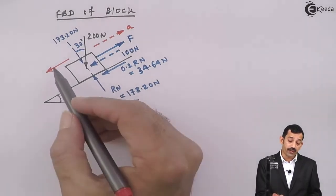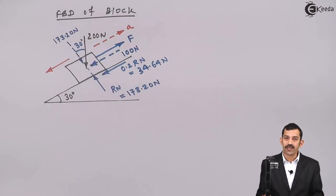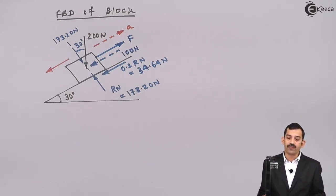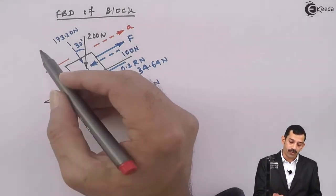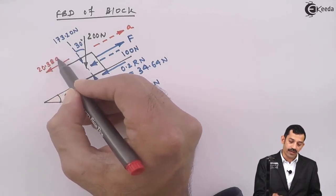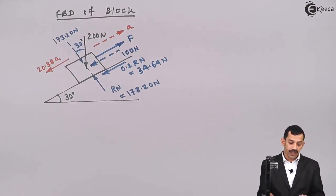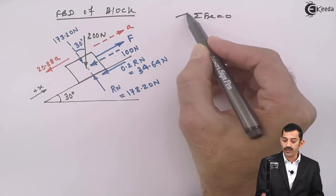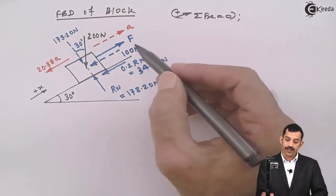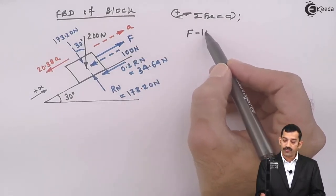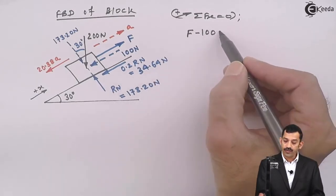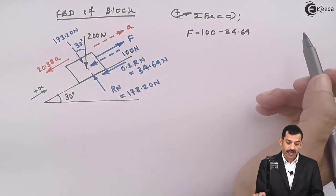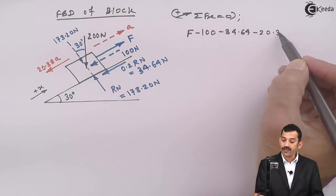Be careful — the inertia force is not 200 × A, because 200 Newton is not mass; it is weight. So we must find the mass. Using W = mg, mass m = W/g = 200/9.81 = 20.38 kg. Now the complete free body diagram is ready. Applying D'Alembert's equation along the plane, taking upward direction as positive: F − 100 − 34.64 − 20.38a = 0.